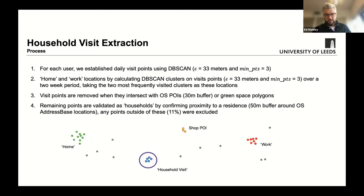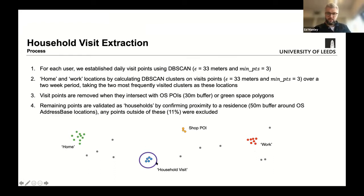The remaining points are validated visits to households or residences by ensuring they're within a 50-metre buffer of address space locations. The remaining roughly 11% of points — in fields and so forth — have been removed. What you end up with is a classification of home and work, with another visit point that intersects with a shop excluded, and another set of activity that intersects with a residence and doesn't intersect with a point of interest or green space — that's classified as a household visit.